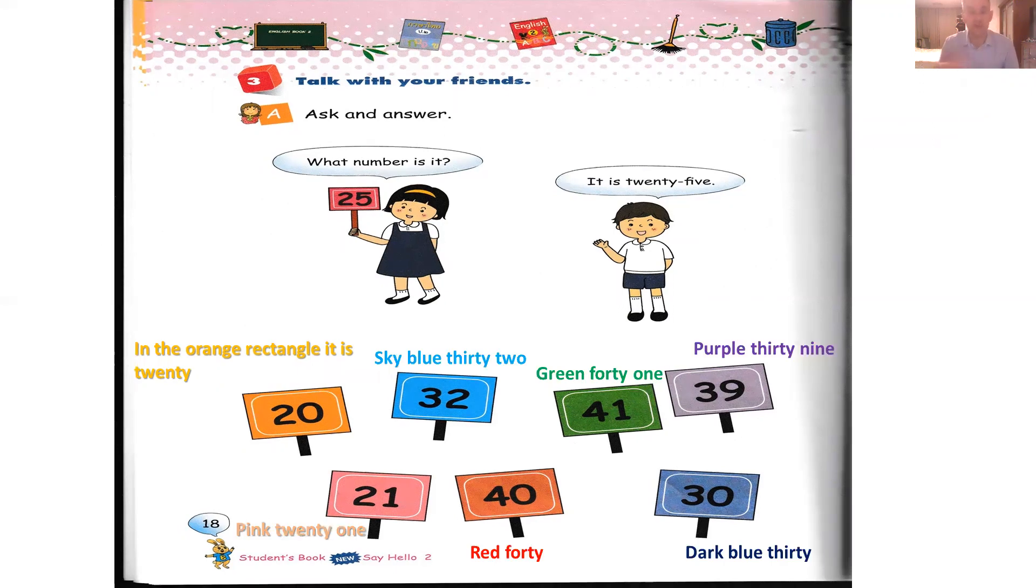Okay, so now you can follow me if you have some difficulties. So first, in the orange rectangle, it is 20. In the sky blue rectangle, it is 32. In the green rectangle, it is 41. In the purple rectangle, it is 39. In the pink rectangle, it is 21. In the red rectangle, it is 40. In the dark blue rectangle, it is 30. Okay, try that again.